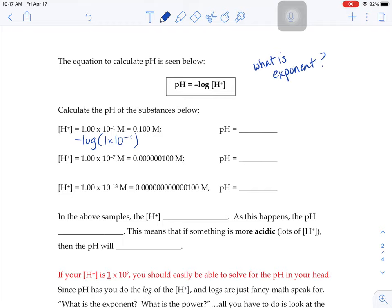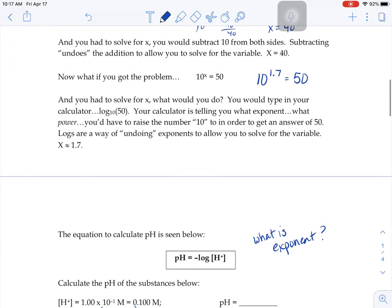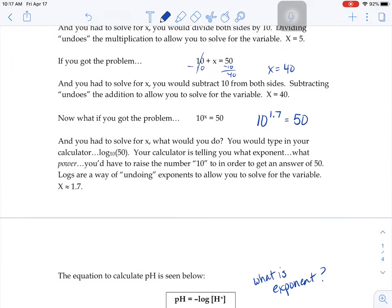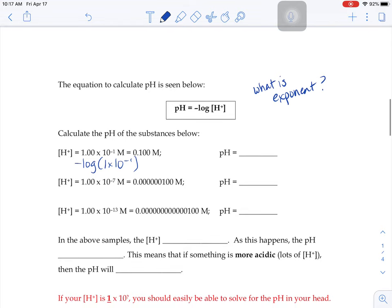It's your calculator's way of saying, solve for the exponent, solve for that 1.7. What do I have to raise 10 to in order to get 50? So if log is just fancy math speak for what is the exponent, when I say what is the exponent of 1 times 10 to the negative 1, you could easily tell me the answer is negative 1.